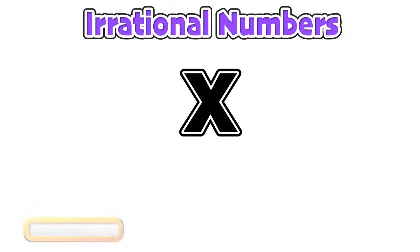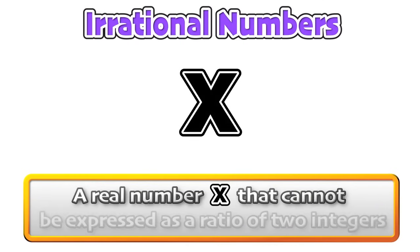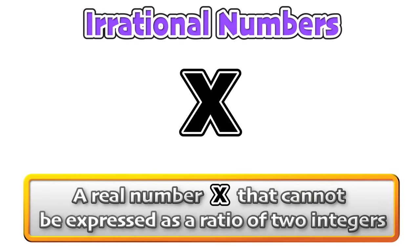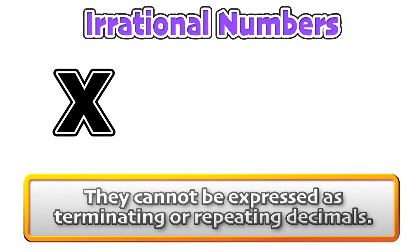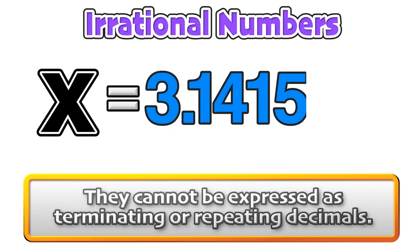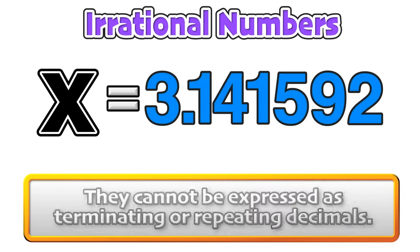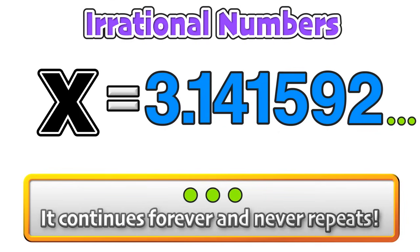Next, we can define an irrational number. A real number x that cannot be expressed as a ratio of two integers is considered irrational. Irrational numbers cannot be expressed as terminating or repeating decimals. Consider a value that continues forever without repeating.